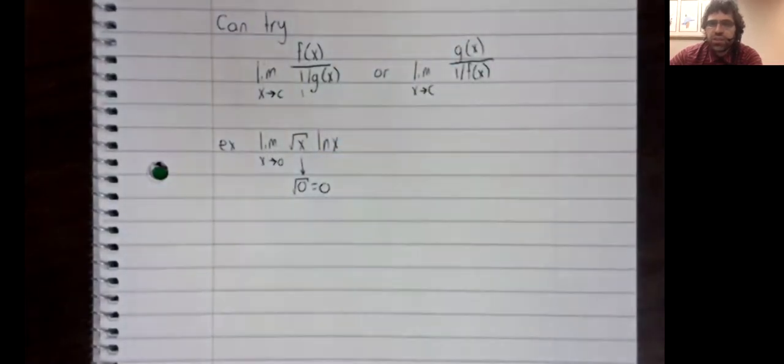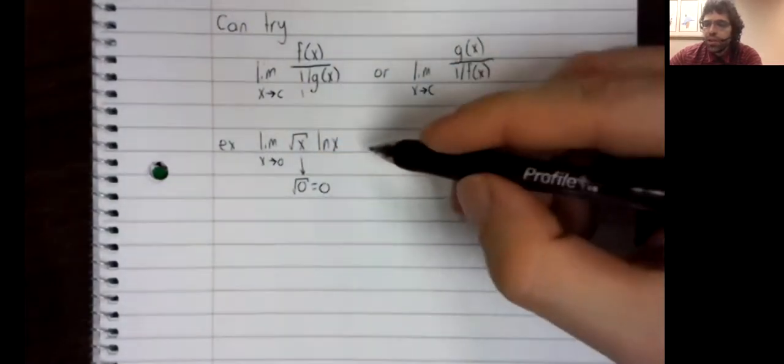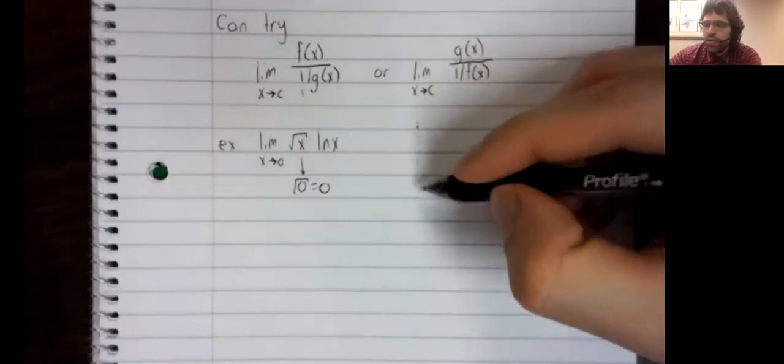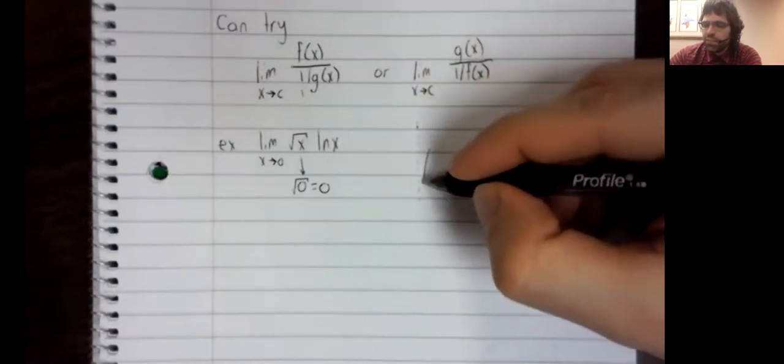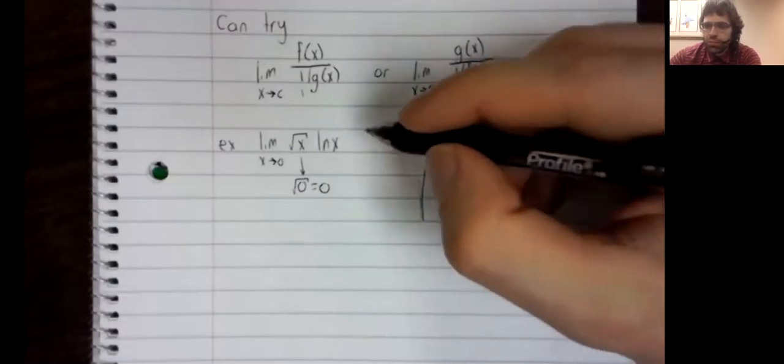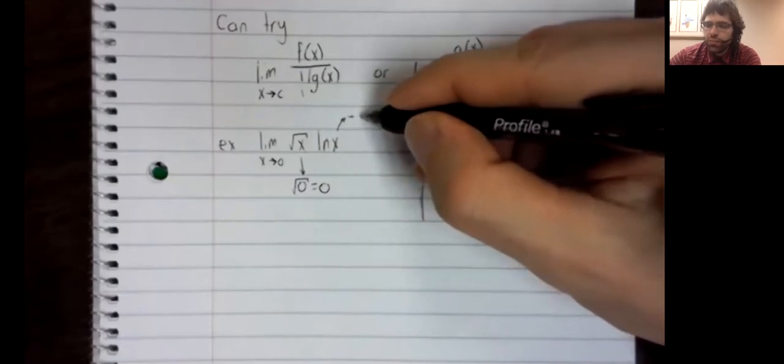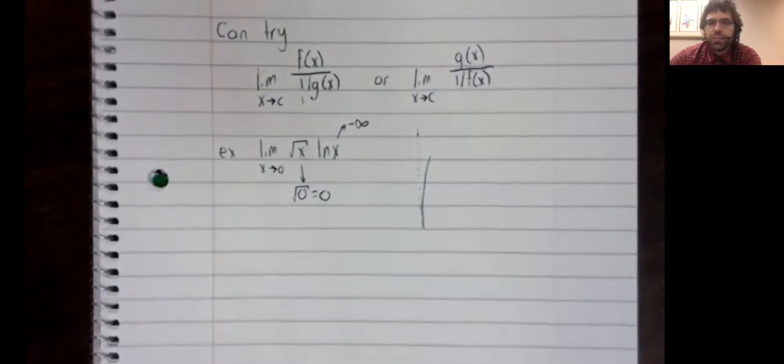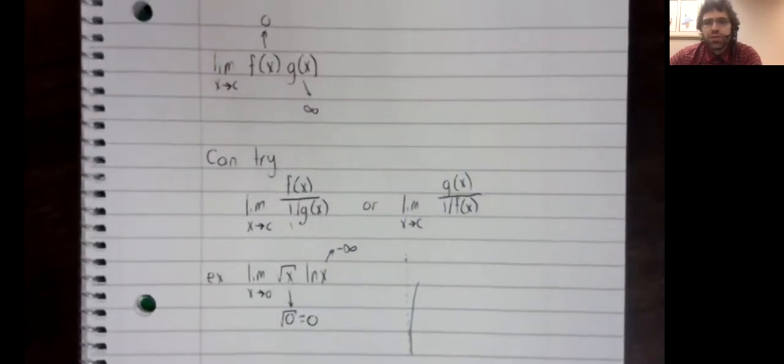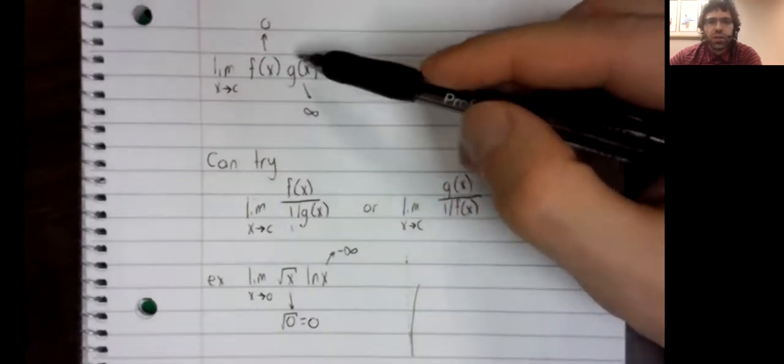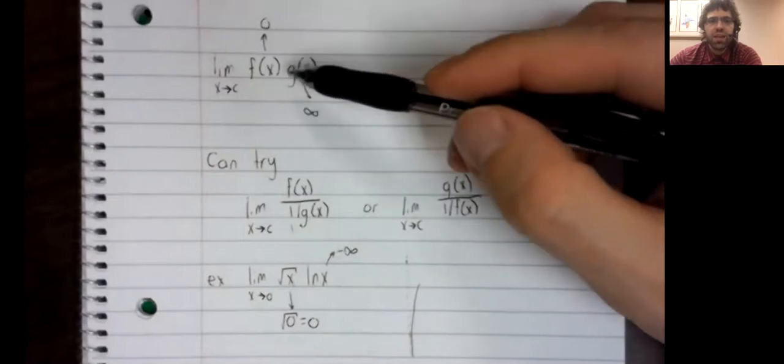The natural logarithm has a vertical asymptote at zero. It's going to negative infinity. So this is an indeterminate form of this type.